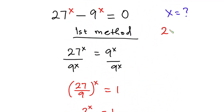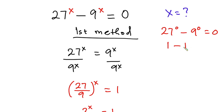Now that we know x equals 0, let's verify. We have 27 to the power 0 minus 9 to the power 0 equals 0. Any number to the power 0 is 1, so we get 1 minus 1, which is 0. That confirms our answer. I hope you found this video useful — please give it a thumbs up, subscribe to the channel, have a nice day, and see you in the next video.